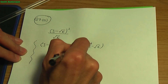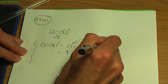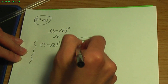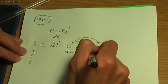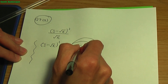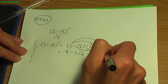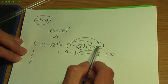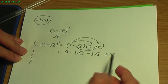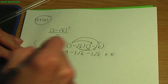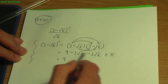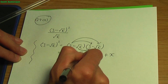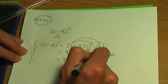3 times 3 is 9. 3 times minus root x is minus 3 root x. Minus root x times 3 is minus 3 root x. And minus root x times another minus root x is plus x. Remember if you multiply two roots of the same term, ignore the roots. So simplifying further, adding the like terms: minus 3 root x minus 3 root x is minus 6 root x, plus the x at the end.